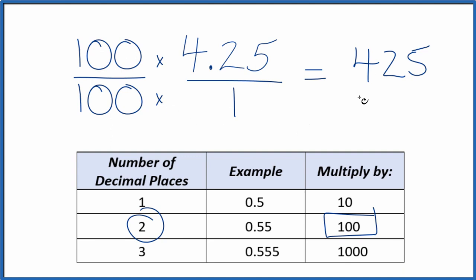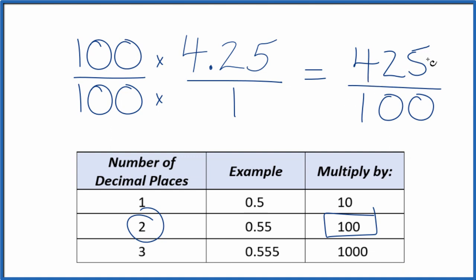So 100 times 1 is 100, and now we have a fraction. 4.25 is equal to the fraction 425 over 100.